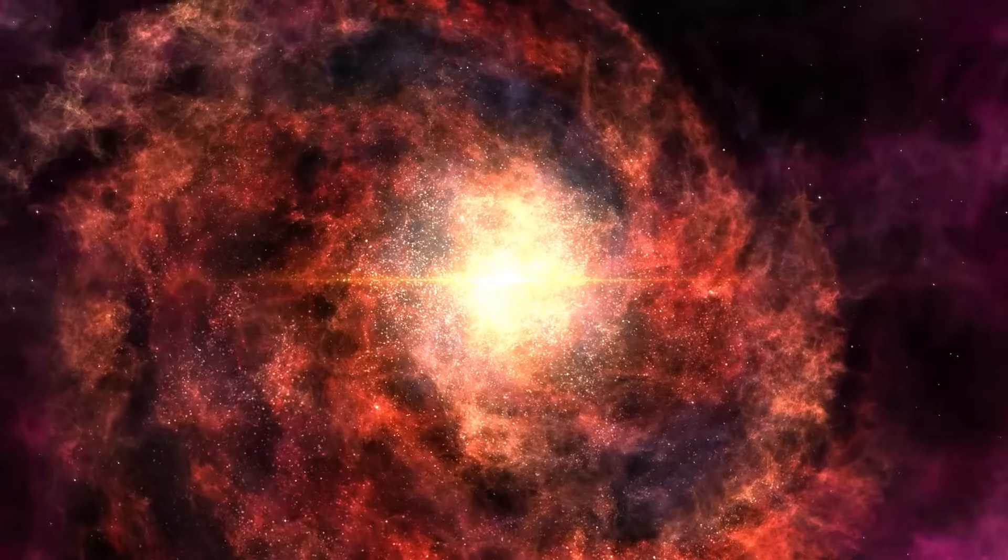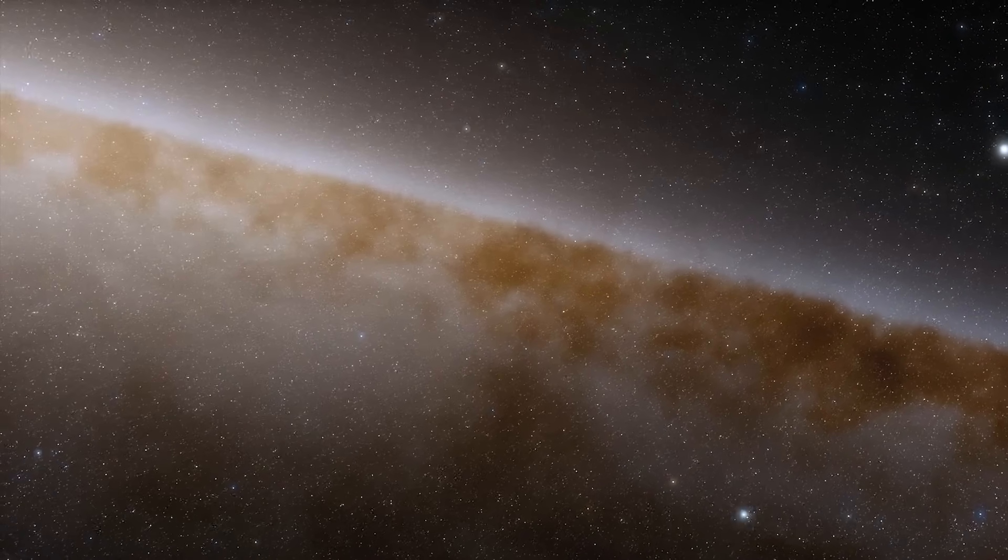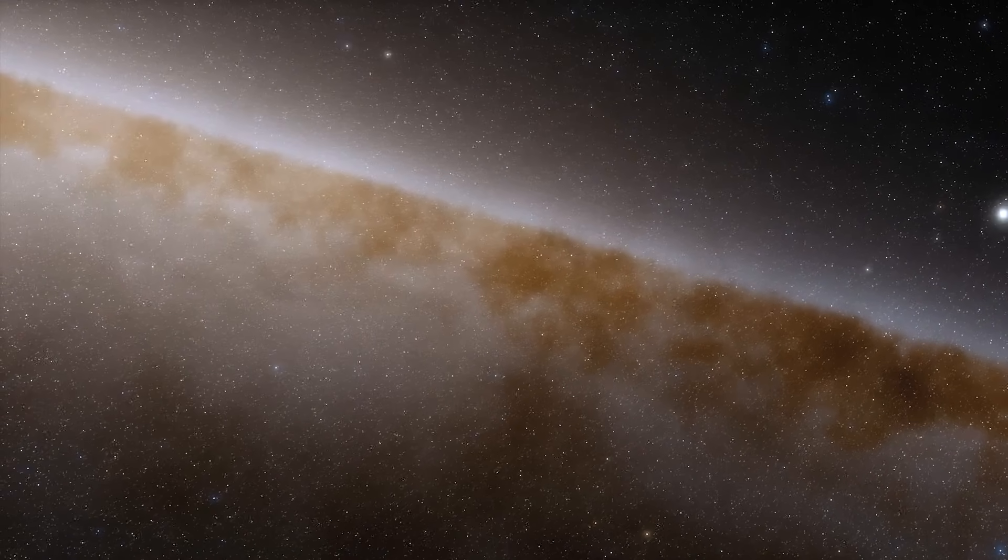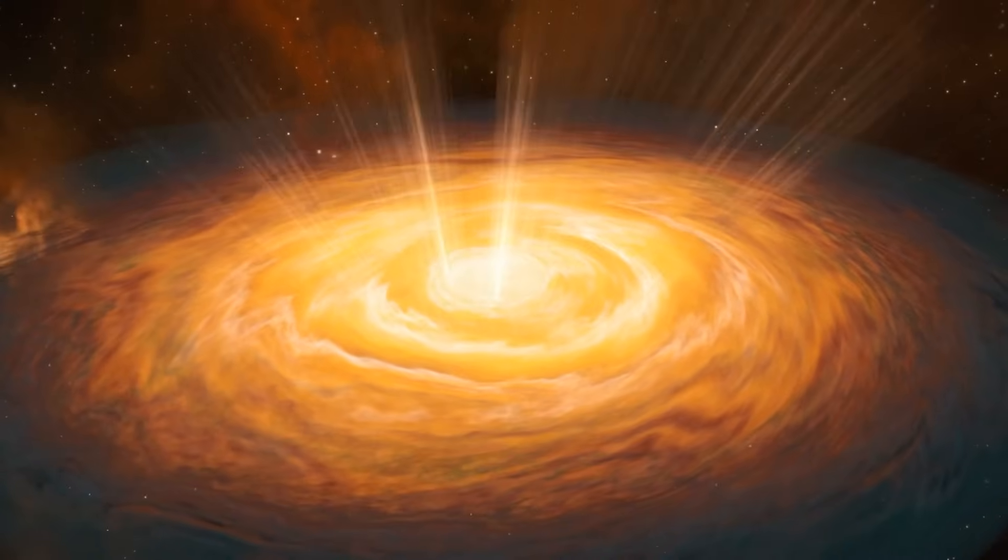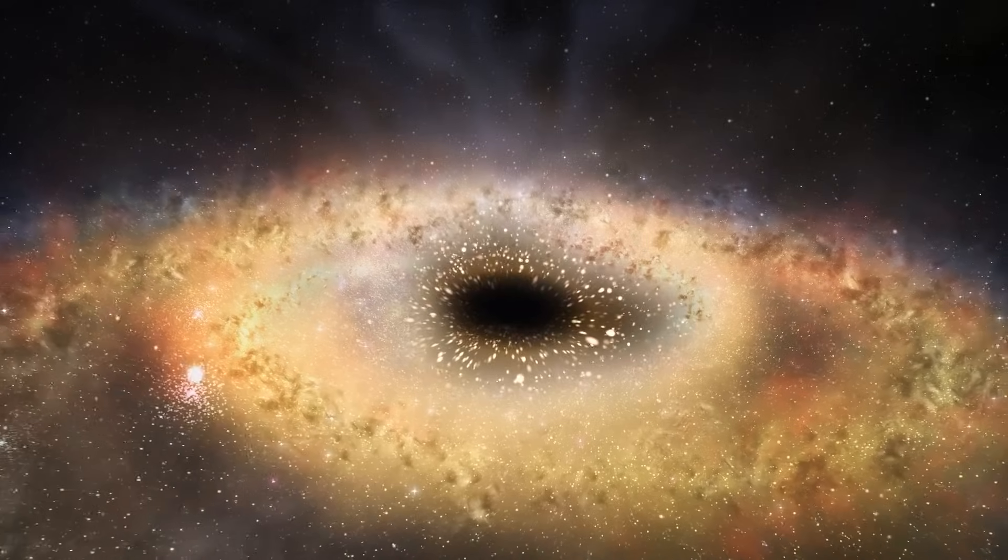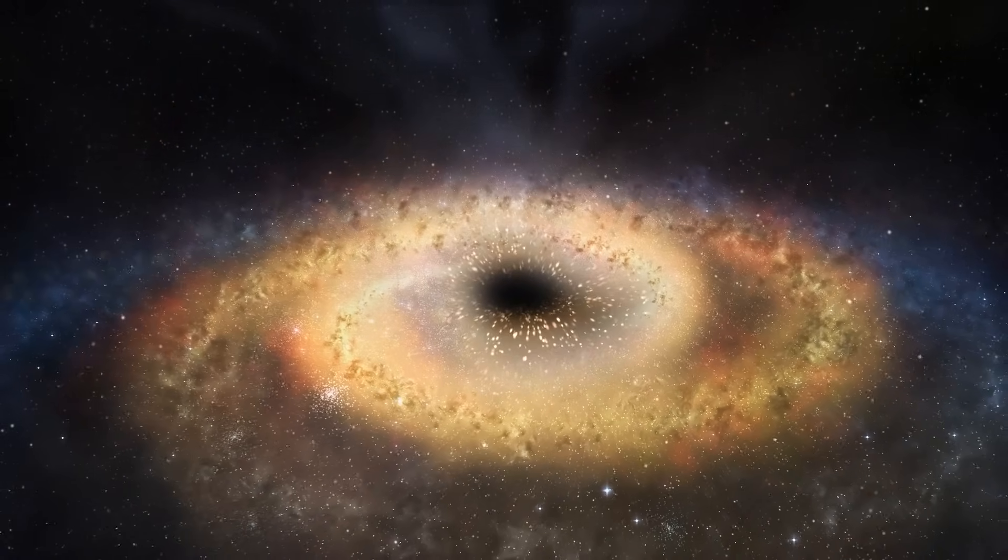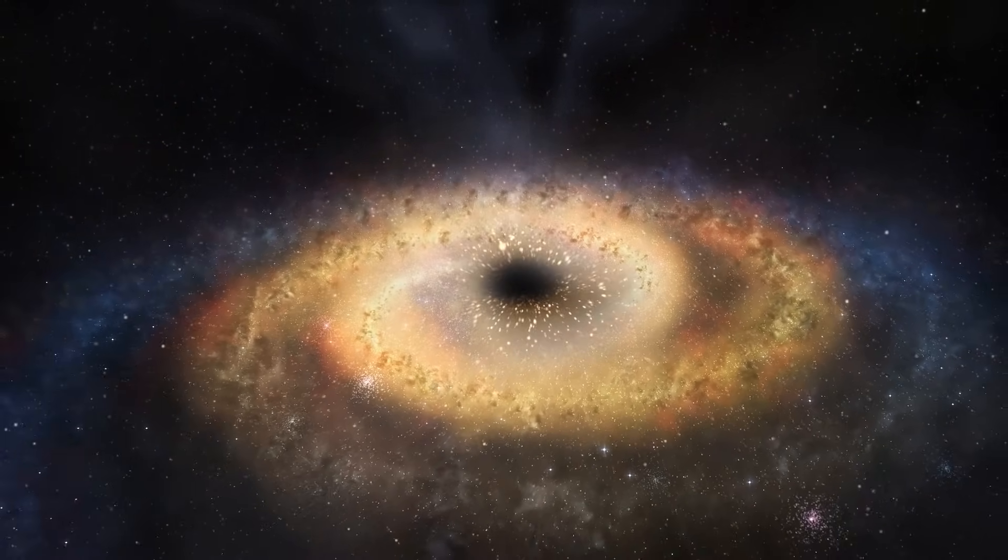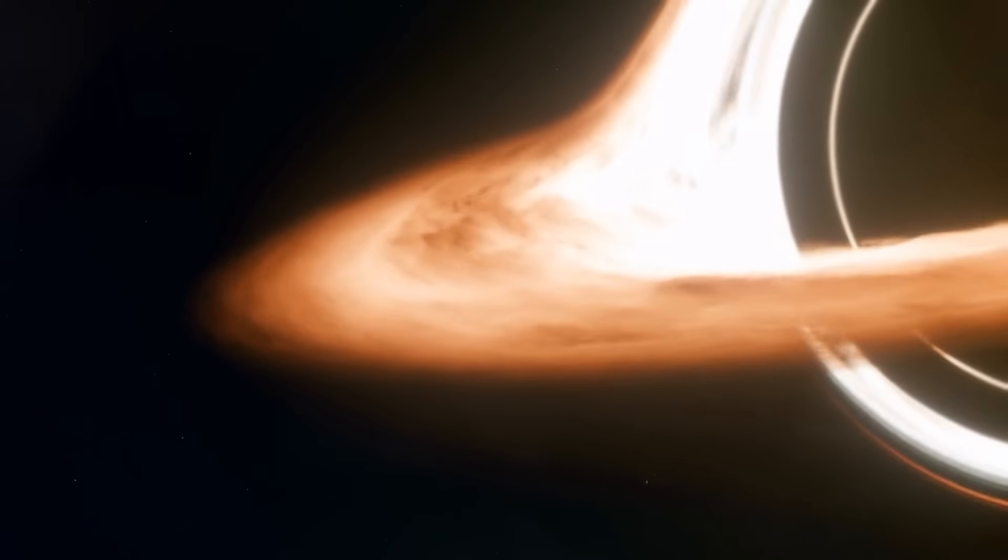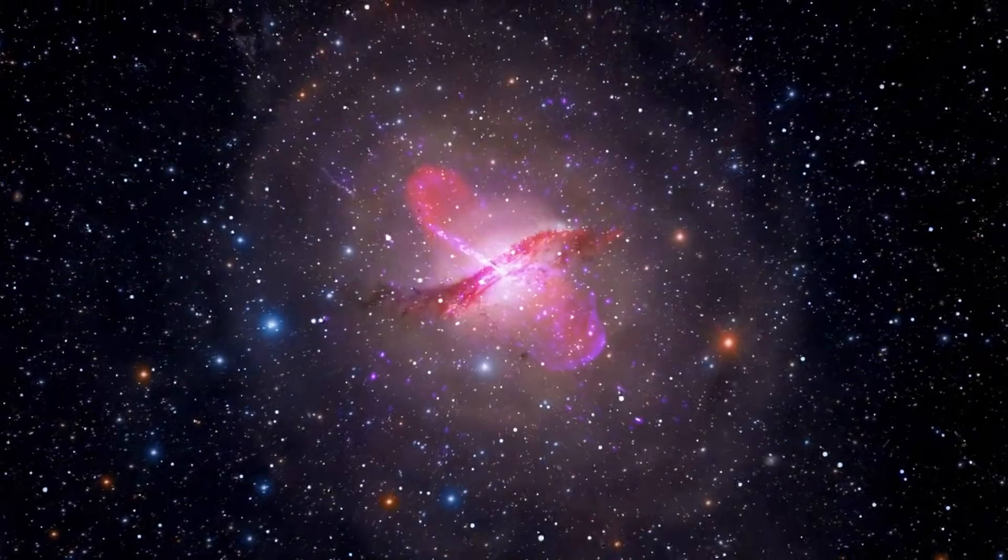The quasars that scientists will soon be studying in detail are not only among the most distant in the universe, but also among the brightest. Not only do these quasars form around the black holes with the highest known masses, they also have remarkably high accretion rates, which means that a lot of material falls into the black holes. The enormous amounts of matter sucked in by the black giants continue to power the quasars and jets.